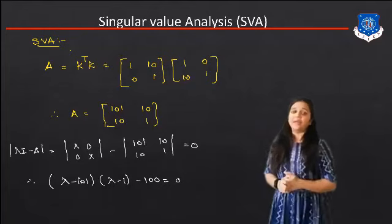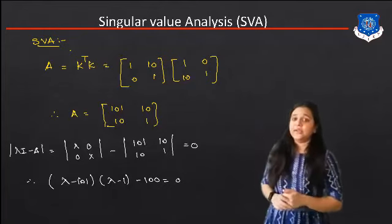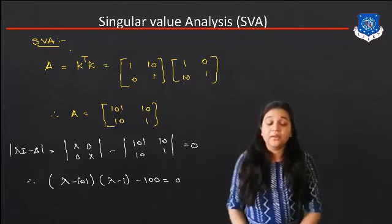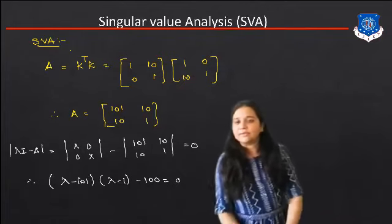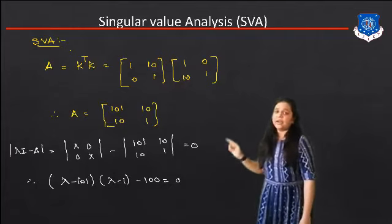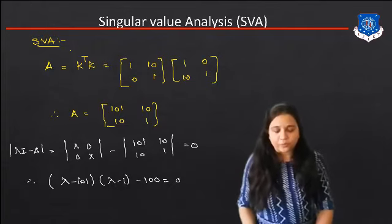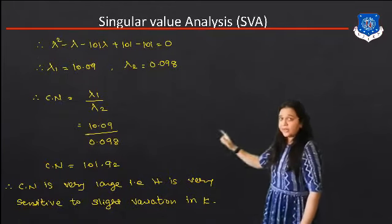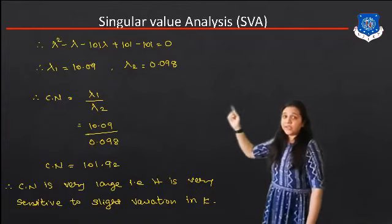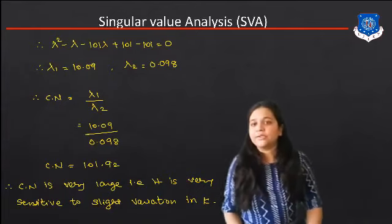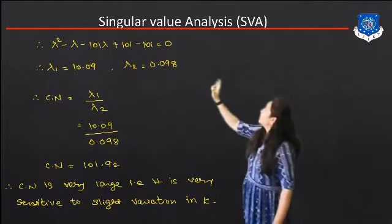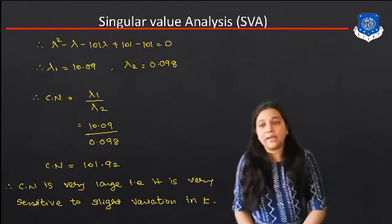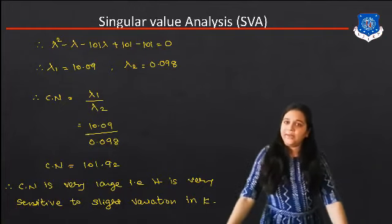Now we find the value of Lambda. Expanding: (Lambda minus 1)(Lambda minus 101) minus (minus 10)(minus 10) equals zero, giving (Lambda minus 1)(Lambda minus 101) minus 100 equals zero. Simplifying: Lambda squared minus 102 Lambda plus 101 minus 100 equals zero, so Lambda squared minus 102 Lambda plus 1 equals zero. Solving this equation using the formula (b squared minus 4ac), we get Lambda 1 equals 10.09 and Lambda 2 equals 0.098.